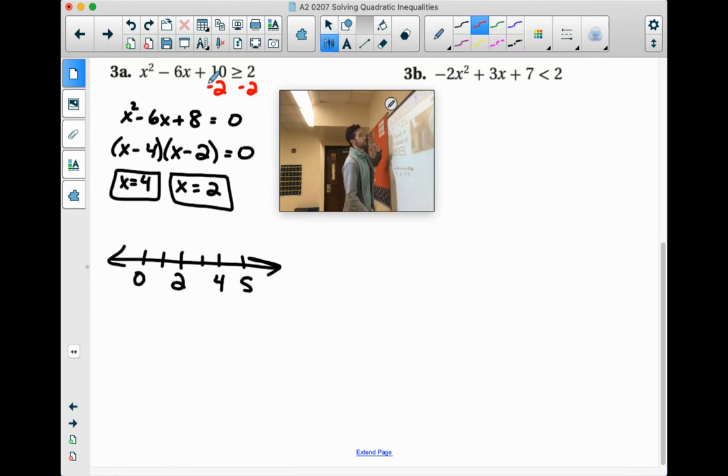Now it did say greater than or equal to, so that gets the solid dots. It includes these values. So at 2 and at 4.